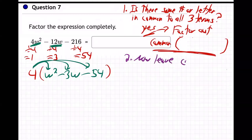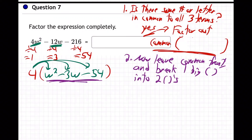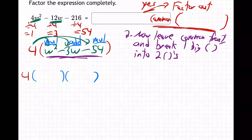Step number two: leave the common factor in the front, and break the one big parenthesis into two parentheses. The four is still going to be in the front, but now we work on the inside part. Remember — multiply, add, multiply, add. So we've got the four in the front and two parentheses. What multiplies to be w squared? It's only w times w.